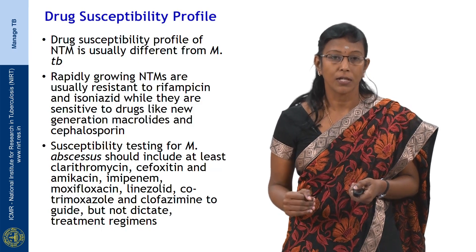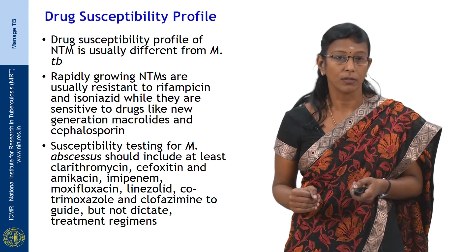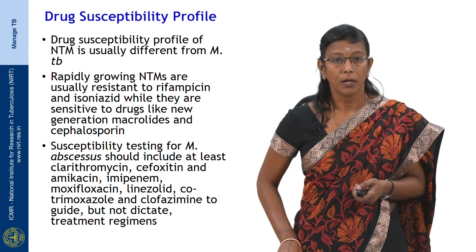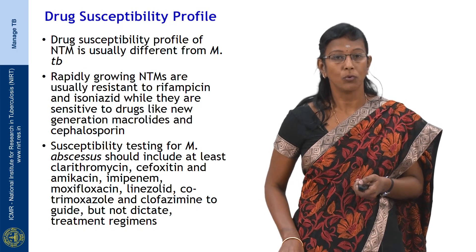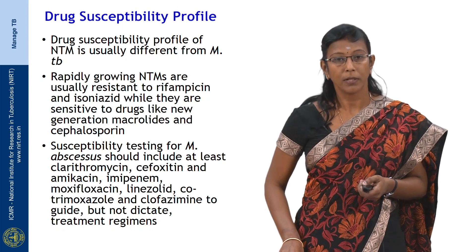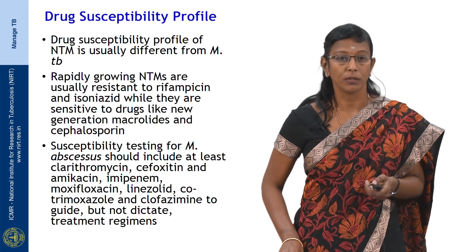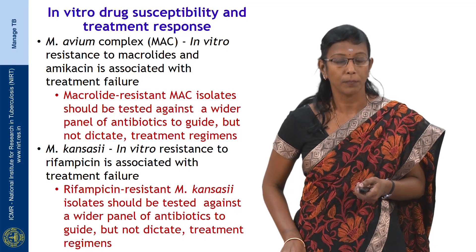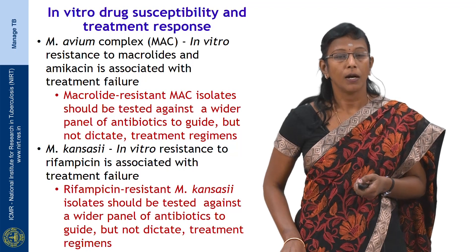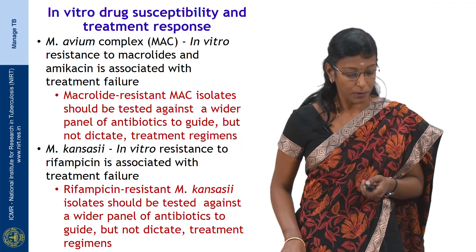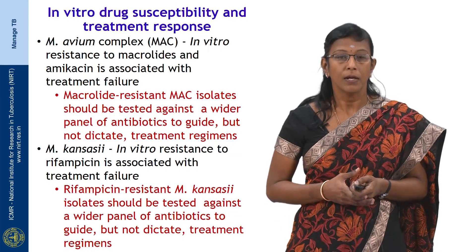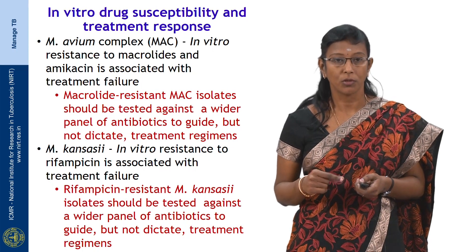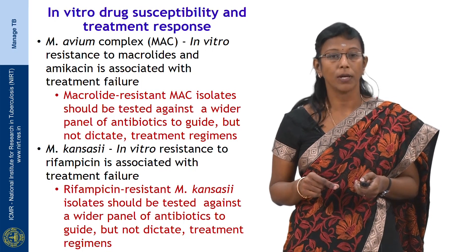We cannot stop at species identification alone; a drug susceptibility profile of these NTMs is also required, as it varies for each organism and differs significantly from M. tuberculosis. Rapidly growing NTMs are usually resistant to rifampicin and isoniazid while sensitive to macrolides and cephalosporins. Susceptibility testing for M. abscessus requires a larger group of drugs. Drug susceptibility patterns may not always correlate with clinical response and serve as a prognostic indicator. In MAC, resistance to macrolides and amikacin is associated with treatment failure, and for M. kansasii, in vitro resistance to rifampicin is a high prognostic marker for treatment failure.